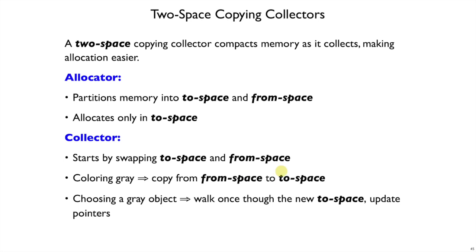Because we split memory in half, there's definitely enough room in to-space to take all the objects that were in from-space. But hopefully we don't need all those objects, so we won't fill up to-space and can keep allocating. Copying an object from from-space to to-space is the same as coloring it gray, and picking a gray object and transitioning it to black corresponds to walking through the objects in to-space.